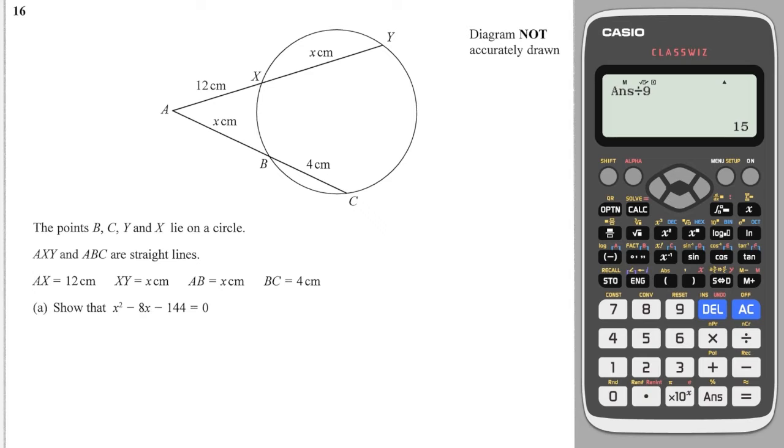Okay, next question, and we're asked to show that this is going to give me a quadratic, but same thing. We need to do X to the intersection point times by Y to the intersection point is equal to B to the intersection point times by C to the intersection point. So X to A is 12, and Y to A is all the way along here, so that's X plus 12, and B to A is just X, and C to A is all the way along here, so that's X plus 4.